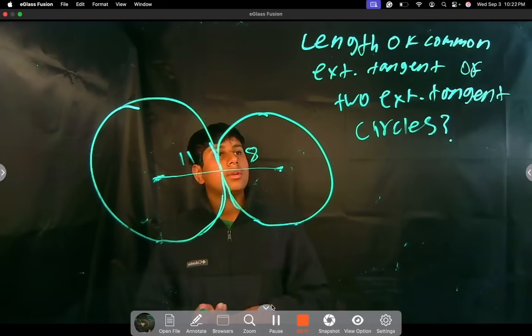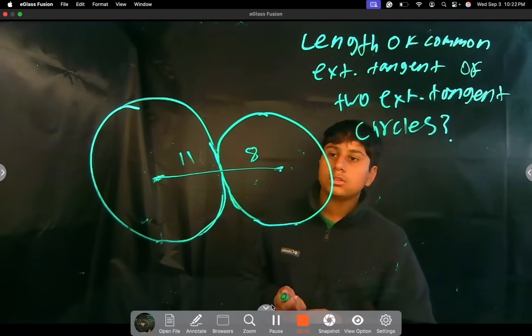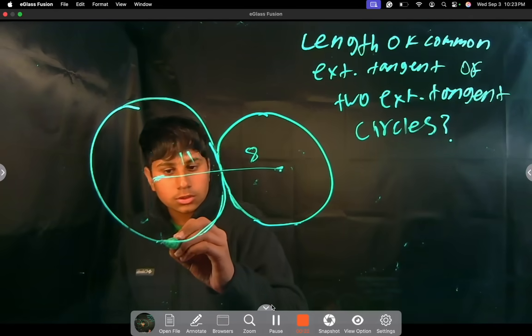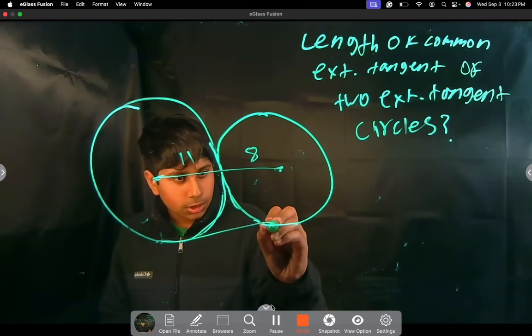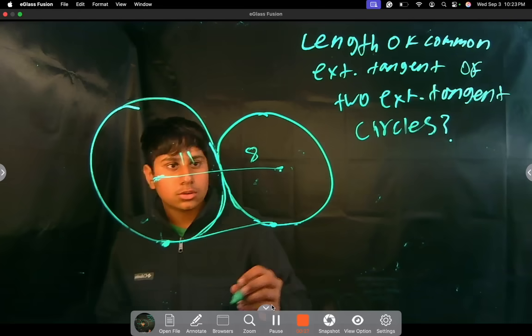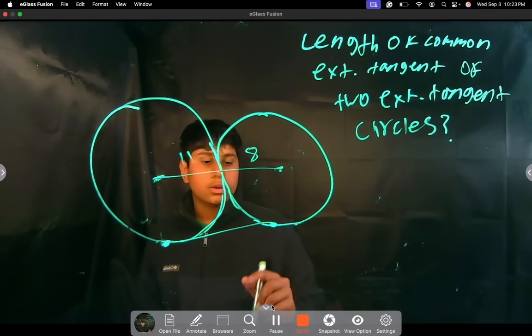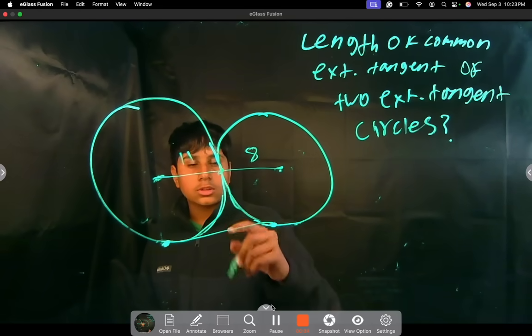We're asked to find the length of the common external tangent of two externally tangent circles. So what does this mean? We have to find the length of a common external tangent. The common external tangent means it's touching both circles, and there are two externally tangent circles which means there's one point on the circle which is here that is touching.